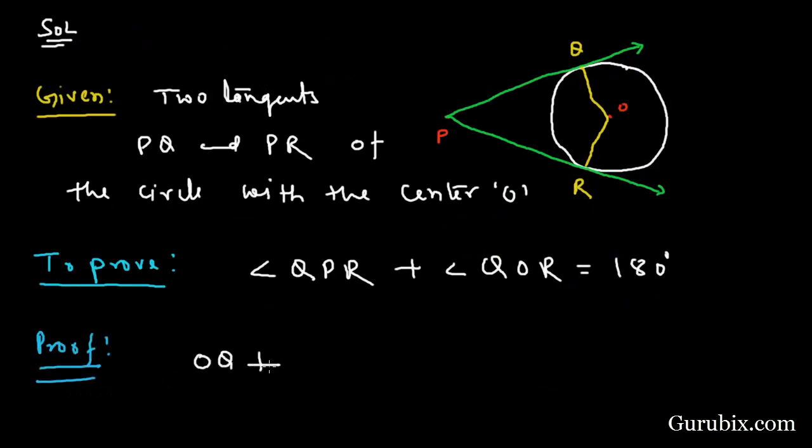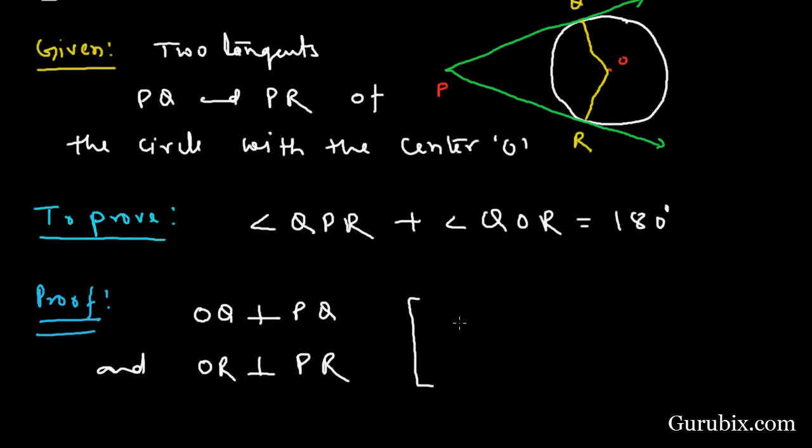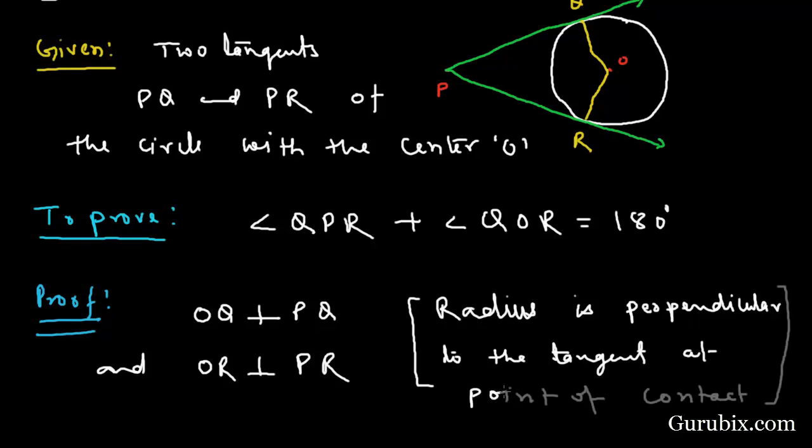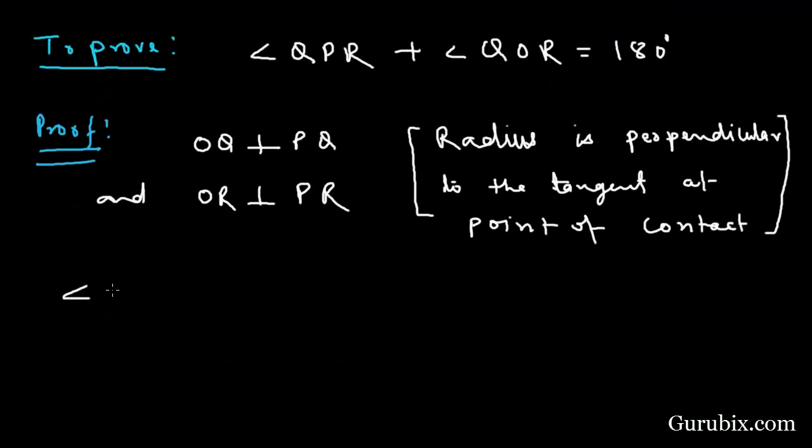is perpendicular to the tangent at point of contact. Therefore, angle OQP equals 90 degrees and angle ORP equals 90 degrees.